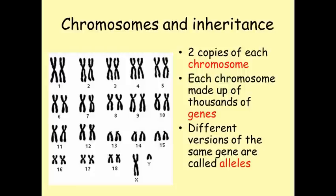For this reason, we shouldn't really talk about a gene causing a particular genetic disease. We should actually talk about an allele that causes the disease. For example, everyone has a gene that causes blood to clot. Most people have the normal healthy allele of this gene, but some people have a damaged version that means their blood does not clot properly. This is the allele of the gene that causes haemophilia.